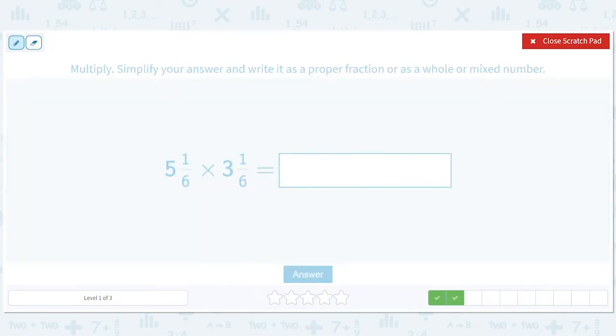So thirty-one-sixths times nineteen-sixths. This makes us sad because these aren't nice numbers. So we're going to have to do, just in the interest of time, let's do thirty-one times nineteen over here. So we have five eighty-nine